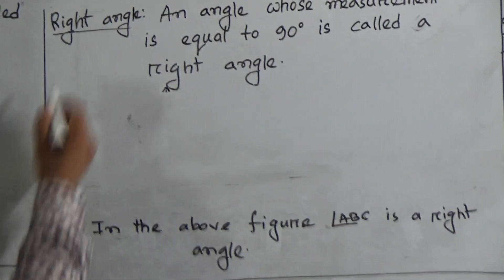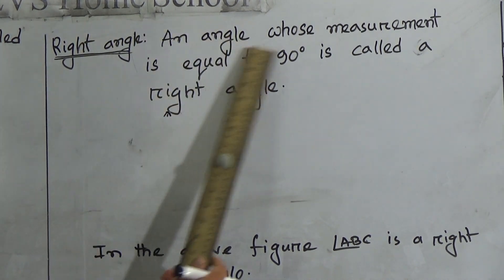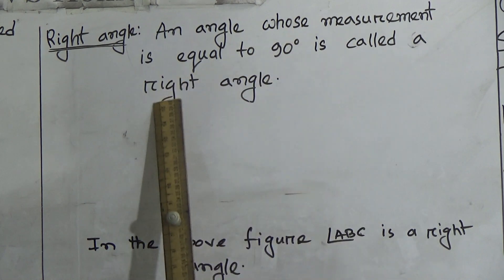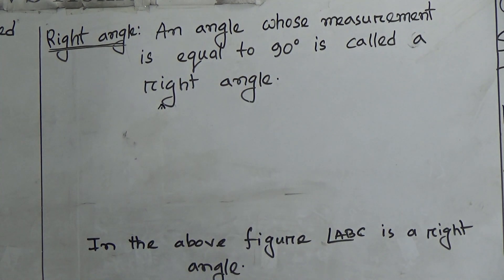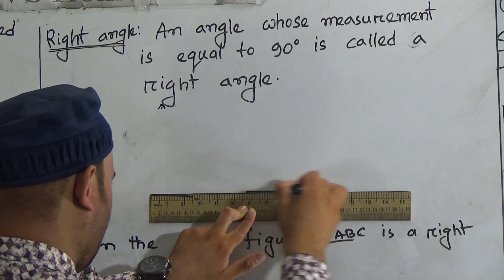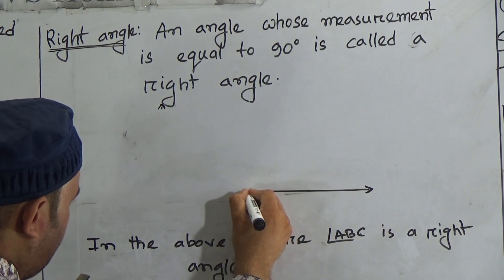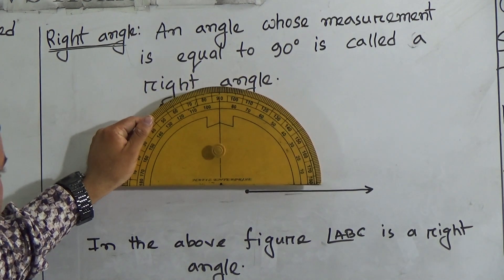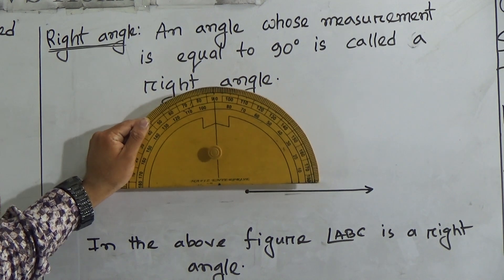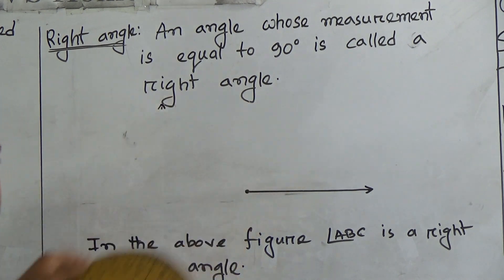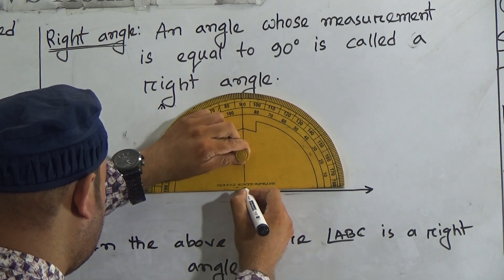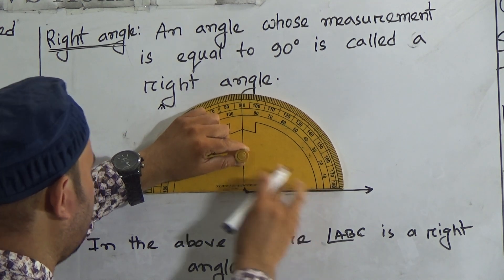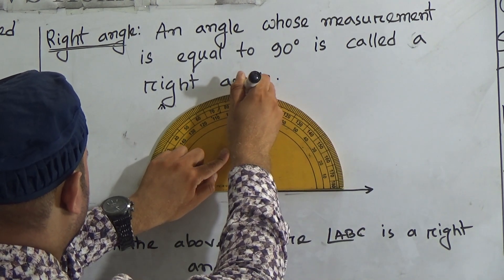Now go to the next one, which is right angle. An angle whose measurement is equal to 90 degrees is called a right angle. So we have to draw a right angle here. First, draw a ray — it has a definite point but no definite length. Then you have to use the protractor. This is called a protractor and it is used to draw an angle with measurement. So here we have to draw an angle of 90 degrees. Put the protractor on this point, then find out where 90 degrees is and denote it by a point.